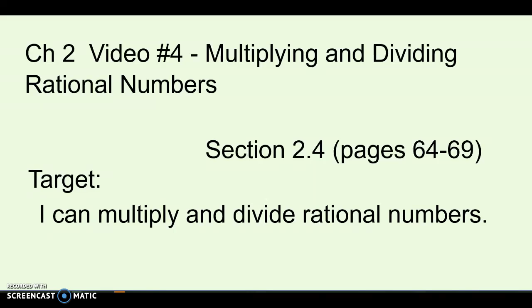Okay, this is the last video in chapter 2, and they kind of combine multiplying and dividing rational numbers together into section 2.4. So it's pages 64 to 69 in the book. There's more examples there if you need it. Our target for this section, or this video, is to multiply and divide rational numbers. So that could be fractions, it could be decimals, it could be integers, and they could be positive or negative. So we're putting it all together.